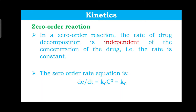When we talk about rates of reaction, we have zero order, first order, second order, pseudo first order, and so on. But most commonly we come across two kinds: zero order or first order. This is very fundamental — if data is given to you, you should be able to tell whether that rate of reaction is zero order or first order.